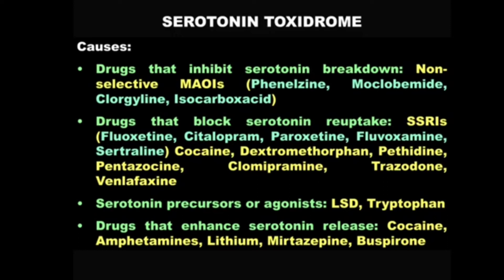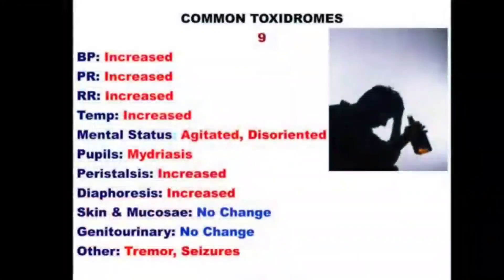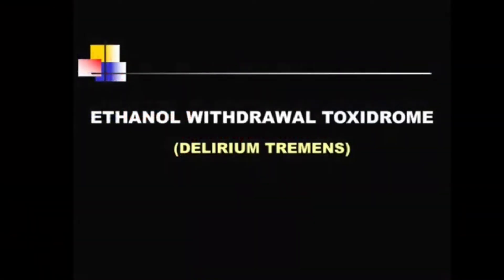Toxidrome number nine features an image of an individual who appears to be an alcoholic. However, we are not talking of alcohol intoxication but rather withdrawal. These are the features seen in alcohol withdrawal in an addict who has been consuming large amounts over a long period. The most important manifestation is seizures, and the prominent psychiatric features give rise to the name delirium tremens — a life-threatening, commonly seen alcohol withdrawal toxidrome.